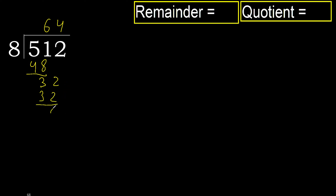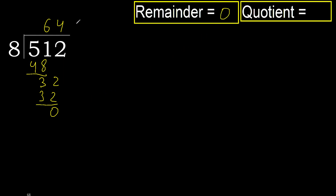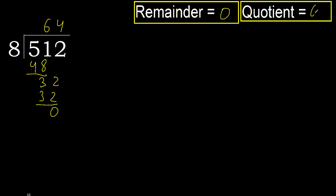Ok. Subtract. Next. There is no number, therefore finish it. Ok. 512 divided by 8 is 64.